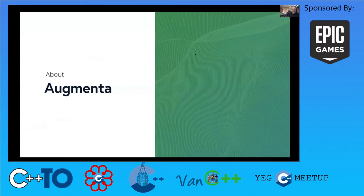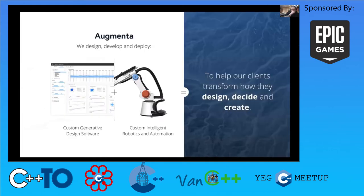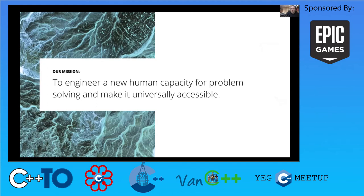Just a quick digression about Augmenta. Augmenta was founded in mid-2019, based in Toronto, with about 20 employees. It's an early stage startup developing generative design software and automation for customers in advanced manufacturing and AEC. We design, develop and deploy generative design software and intelligent robotics and automation, with a mission to engineer a new human capacity for problem solving and make it universally accessible.